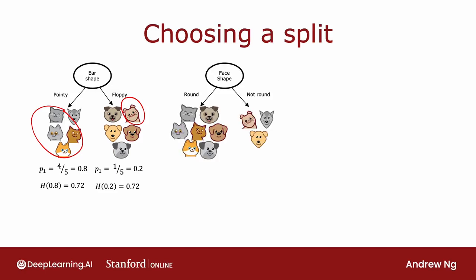Another option would be to split on the face shape feature. In that case, four out of seven examples on the left would be cats, so p1 is four-sevenths, and on the right, one-third are cats, so p1 on the right is one-third. The entropy of four-sevenths and the entropy of one-third are 0.99 and 0.92, so the degree of impurity in the left and right nodes is much higher — 0.99 and 0.92 compared to 0.72 and 0.72.